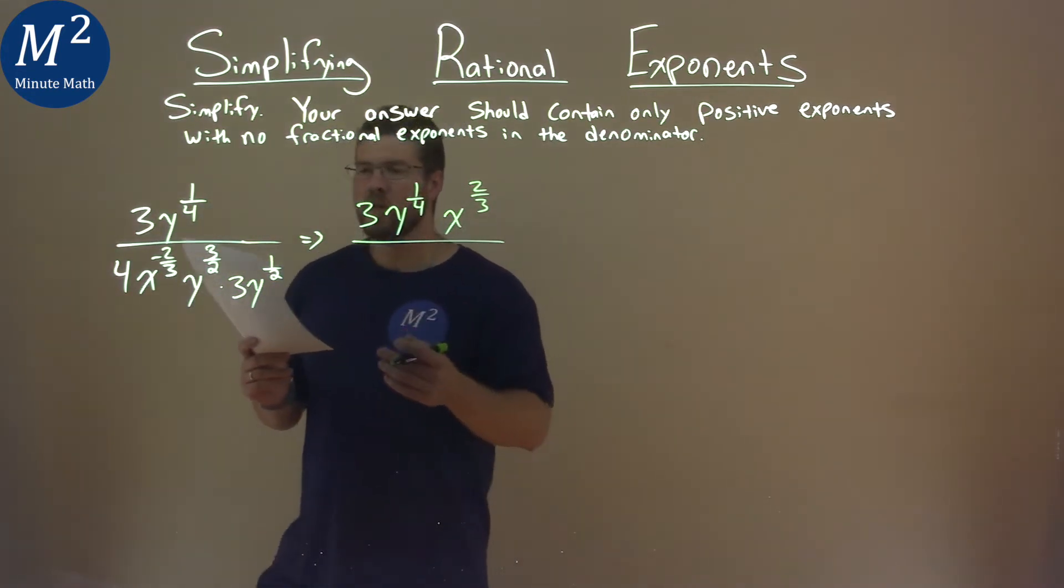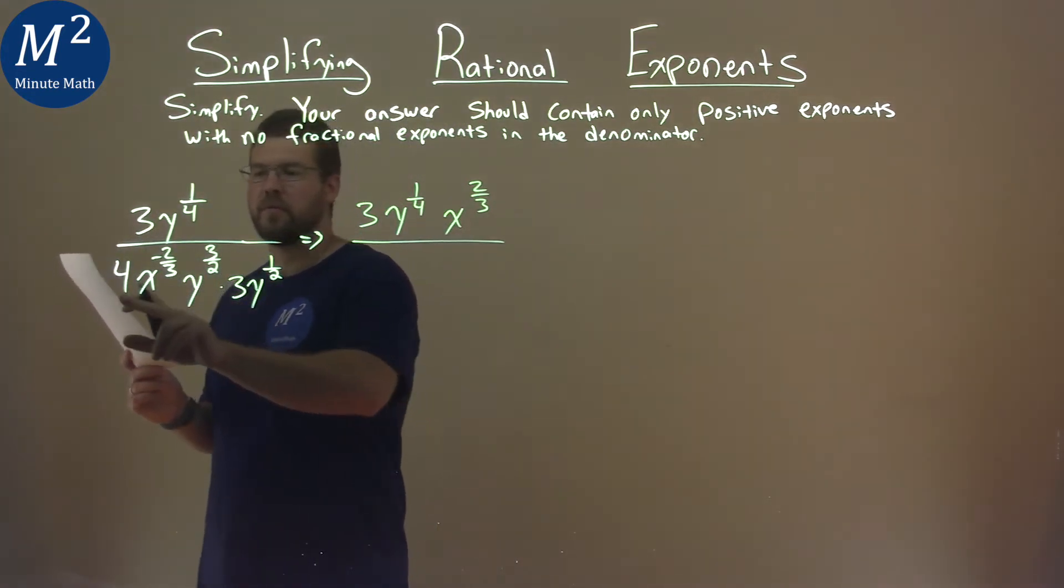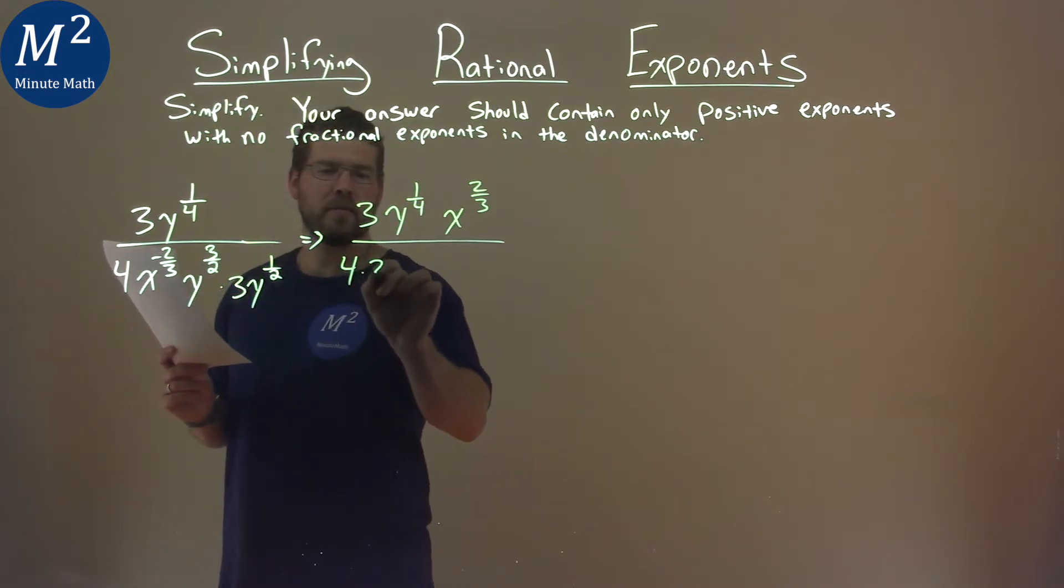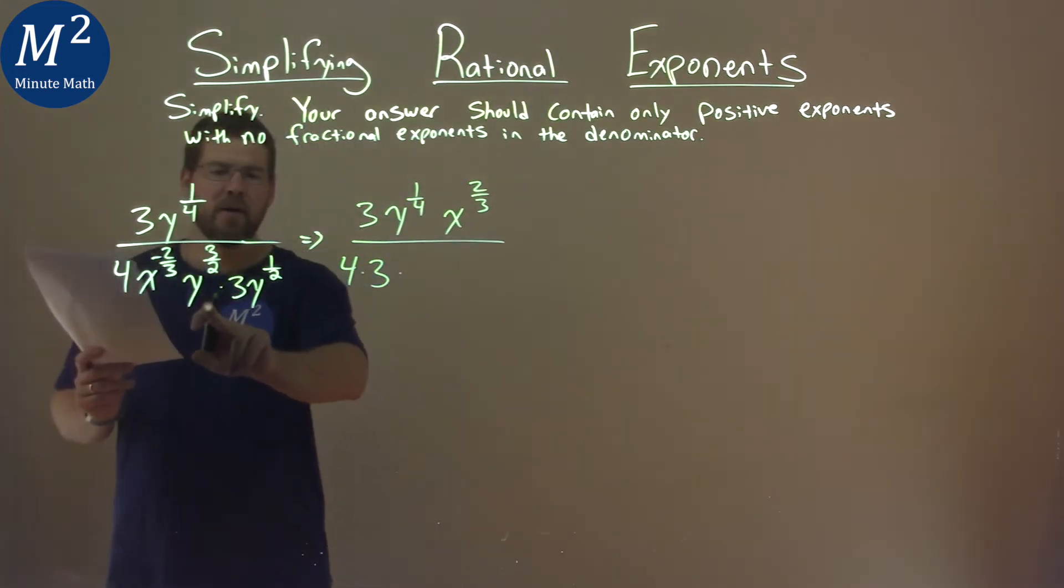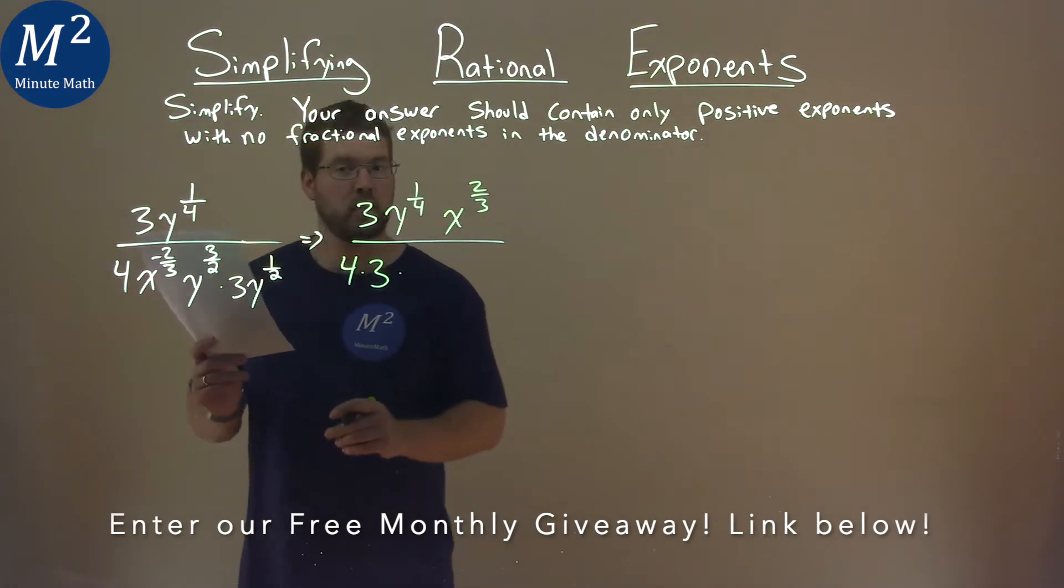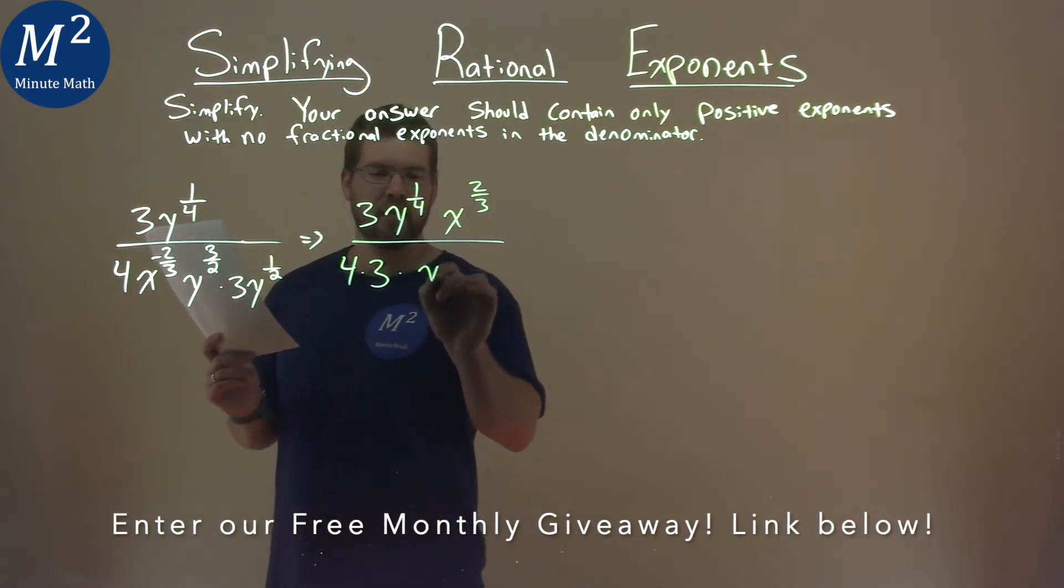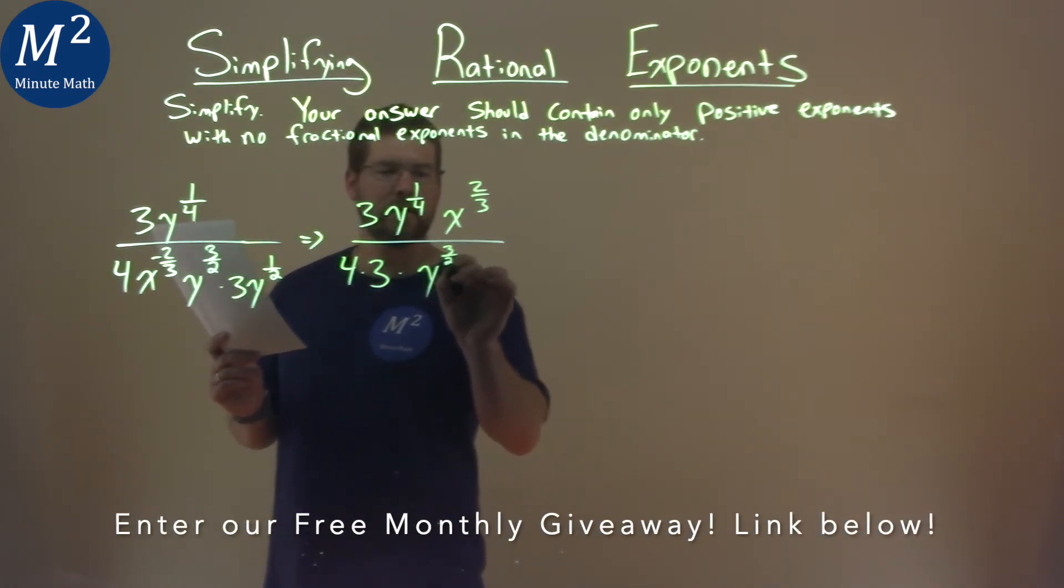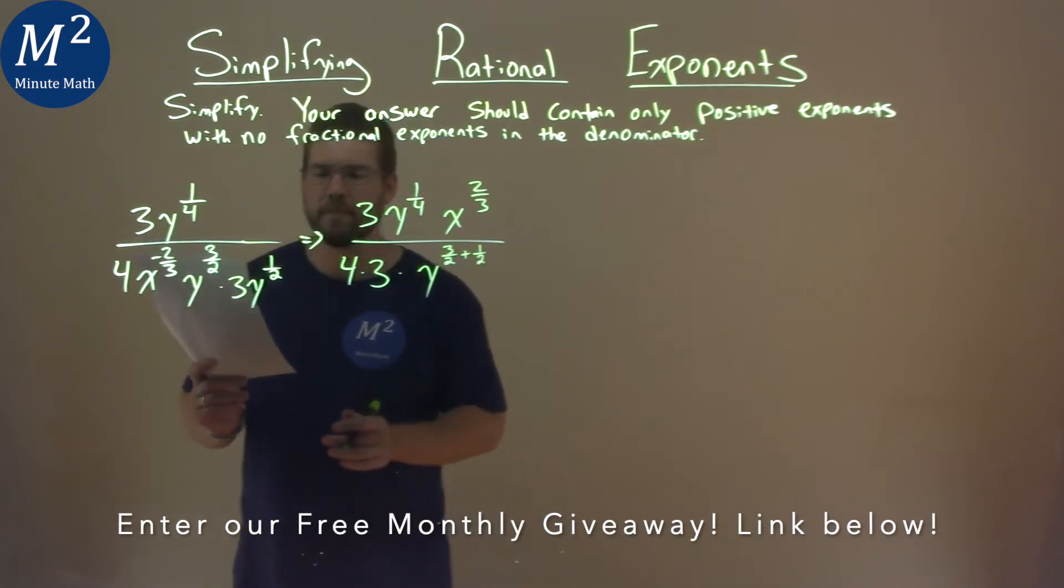We're ordering this out a little. Let's put the coefficients 3 and 4, this right here, 4 times 3. And then we have y to the 3/2 times y to the 1/2. Well, we add the exponents there, so y to the 3/2 plus 1/2.